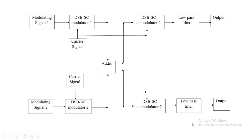This is the circuit diagram for frequency division multiplexing and demultiplexing. Here two modulating signals are used — modulating signal one and modulating signal two. First we set the frequency or amplitude as needed, then each passes through a DSB-SC modulator. In the DSB-SC modulator we also use one carrier signal. Both the modulating signal and carrier are applied to the DSB-SC from both sides.